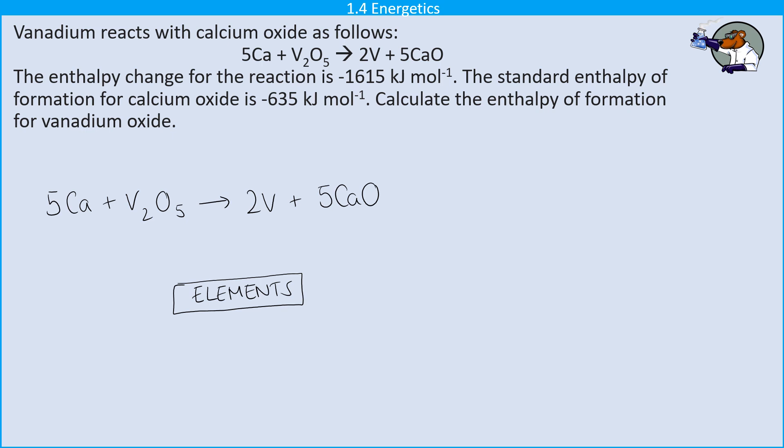And underneath this, I've written elements. So you don't get any marks in this question for saying what the elements are and what their standard states are. So you may as well just save yourself some time and just write elements in a box. I'm using enthalpy changes of formation that are given in the question, as that's why I'm going from elements.